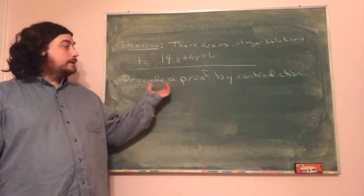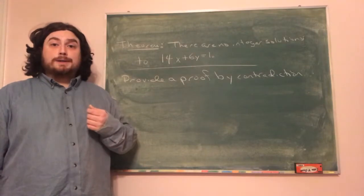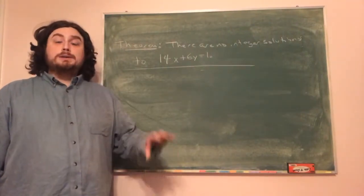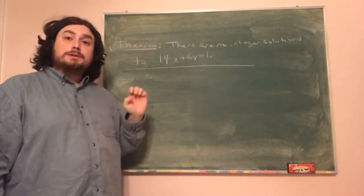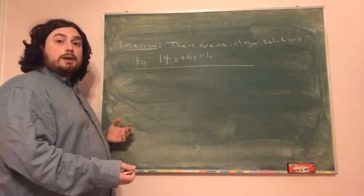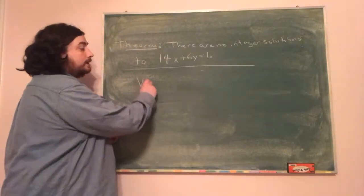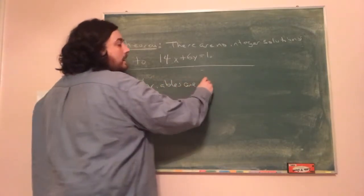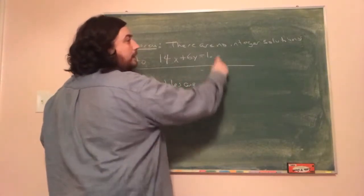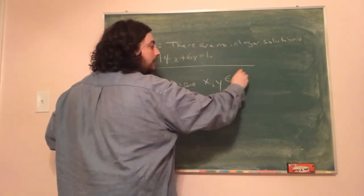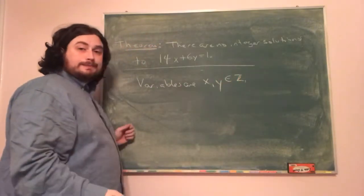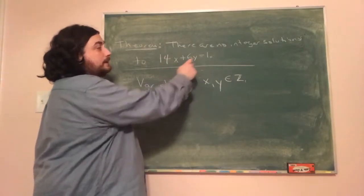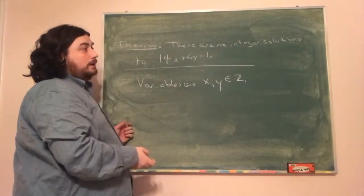We're going to use a proof by contradiction. As we set up our proof by contradiction, the first thing we should do is rewrite the theorem using symbolic logic. So what we have here is that our variables are x and y, and because we want integer solutions, we're going to say that x and y are integers. So we have the statement 14x plus 6y is equal to 1.